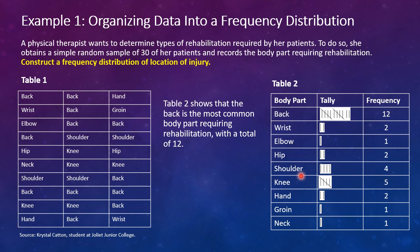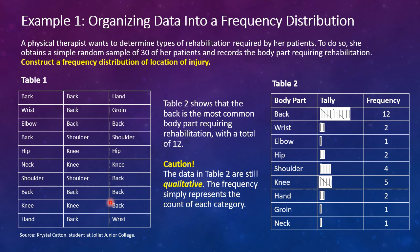Table 2 shows us that back is the most common body part requiring rehabilitation, with a total of 12. You might look at this and say this is quantitative data because there are numbers in it — but it's not. This is still considered qualitative data because the responses were all non-numeric. It was focused on what part of the body needs rehabilitation, even though the frequency distribution gives us some numeric data. We're focused on qualitative responses.